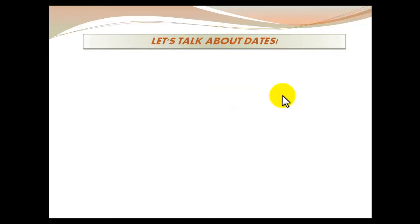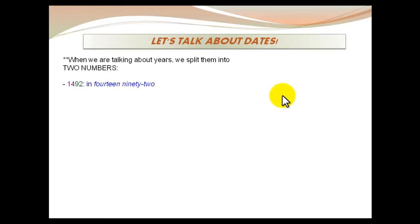When we talk about dates, there are some rules that we must follow. The main rule, the general rule, is that we split the date into two numbers. For example, 1492 is not said as one thousand four hundred ninety-two, but as fourteen ninety-two. You can see this with the colors on 1492. This is the main rule that we should apply to all dates, but there are exceptions.